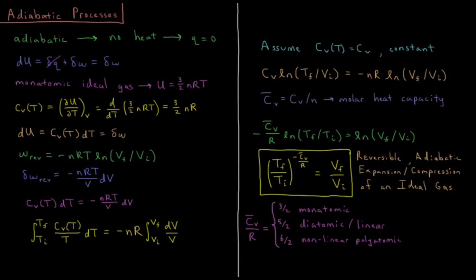This video will discuss adiabatic processes in thermodynamics, specifically in relation to the expansion and compression of ideal gases. The word adiabatic in the context of chemical thermodynamics means no heat. So if there's no heat that occurs during a process, we're defining q, the heat of that process, to be zero.